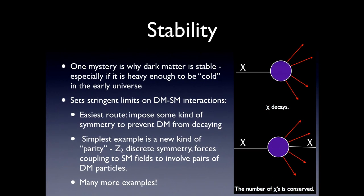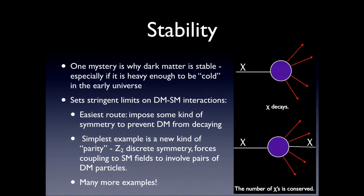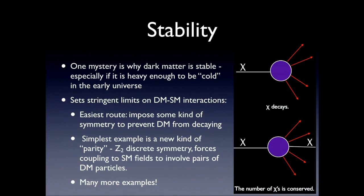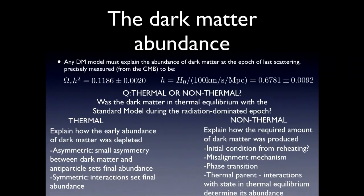This sets pretty stringent limits on how dark matter can interact with the standard model. The easiest route, featured in many particle physics models, is that there is some symmetry that prevents dark matter from decaying - for example, a new kind of parity such that you can only have an even number of dark matter particles involved in any given interaction. A decay of dark matter to the standard model would look like one dark matter particle decaying to standard model particles - we don't want that to happen, or if it happens, it has to happen on a timescale longer than the age of the universe. So we want to forbid or make very unlikely such processes. Any model just has to guarantee stability, which can be a bit unnatural to begin with.